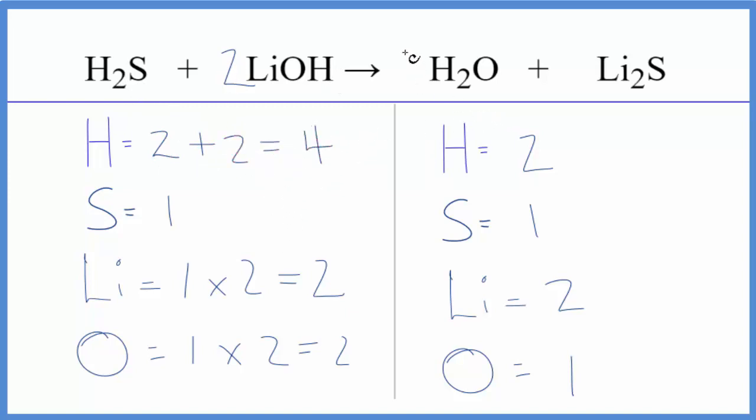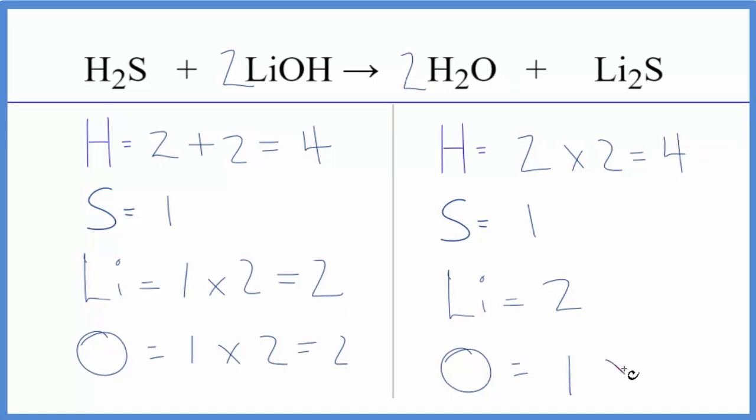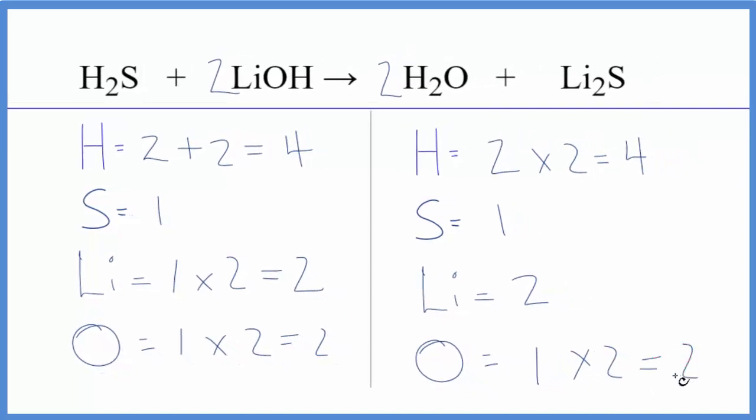Let's just put a two in front of the H2O because now two times two, that'll give us four hydrogens. They're balanced. One times two for the oxygen. That'll give us two, and we're done. This equation is balanced.